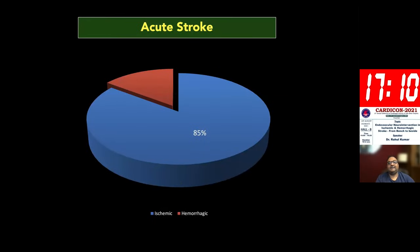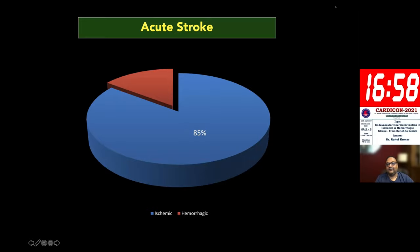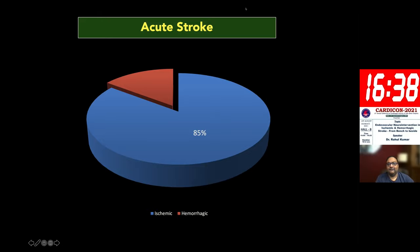Whenever we talk about stroke, we talk about two very distinct conditions: ischemic strokes and hemorrhagic strokes. Ischemic strokes are the majority, accounting for around 85% of cases, and hemorrhagic strokes make up the remaining 15%. Hemorrhagic strokes happen because of aneurysmal ruptures, AVM bleeds, and so on. Since this is a relatively smaller part that has matured over the last decade, we will not be touching much on the hemorrhagic part.